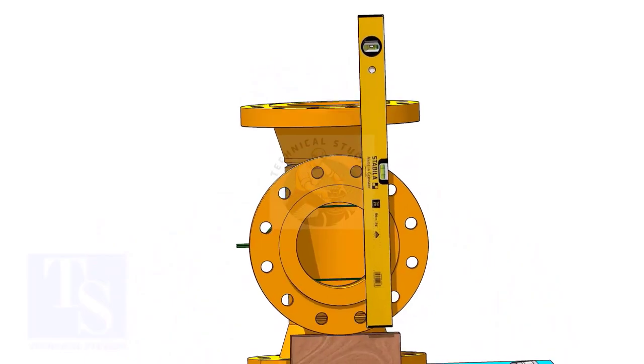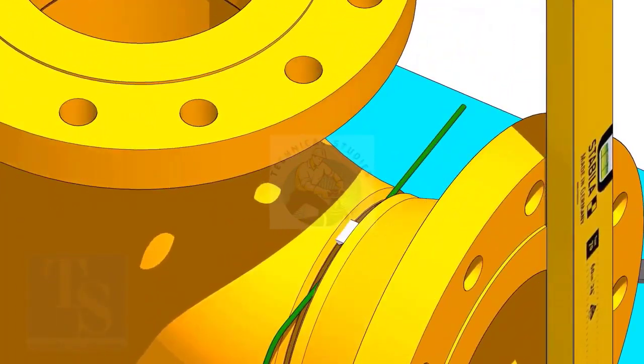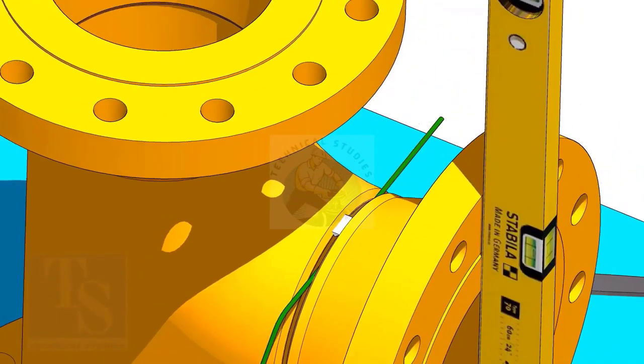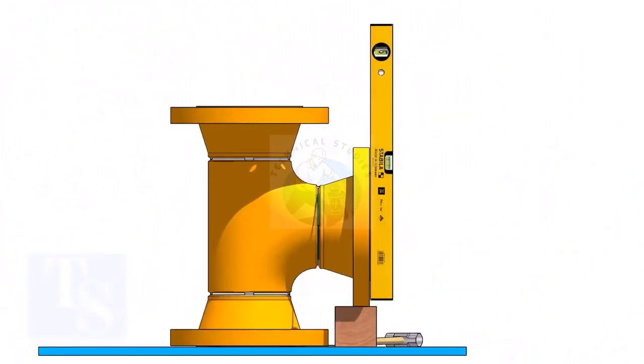Correct the plumbness of the flange holes as shown. Tack weld on the top side. Correct the flange vertically and tack weld below.